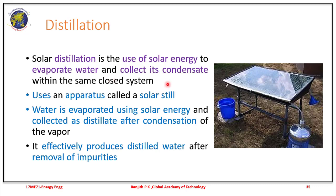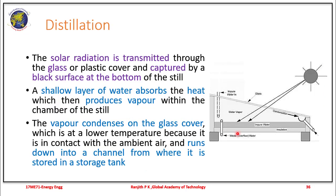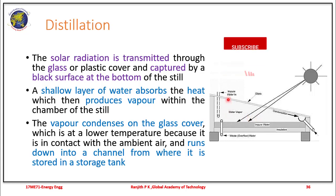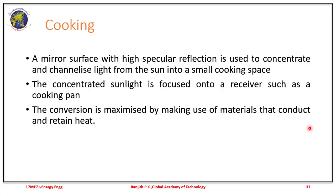Solar distillation is the use of solar energy to evaporate water and collect its condensate within the same system, made using a solar still. The water is evaporated using solar energy and collected as a distillate, effectively producing distilled water after removal of impurities — even sea water can be converted into fresh drinking water. Solar radiation transmitted through glass is captured by a black surface at the bottom. A shallow layer of water absorbs the heat, produces water vapor within the chamber, and the water vapor condenses on the glass cover, runs down through a channel, and is collected.